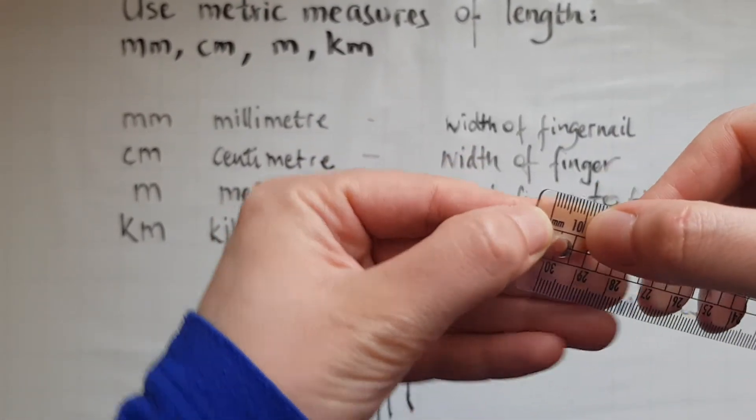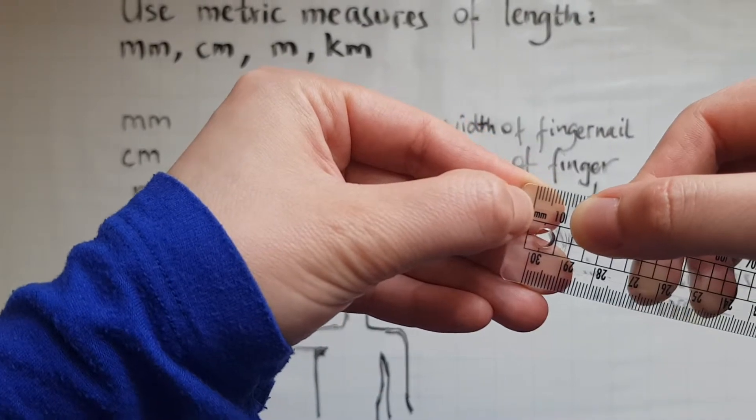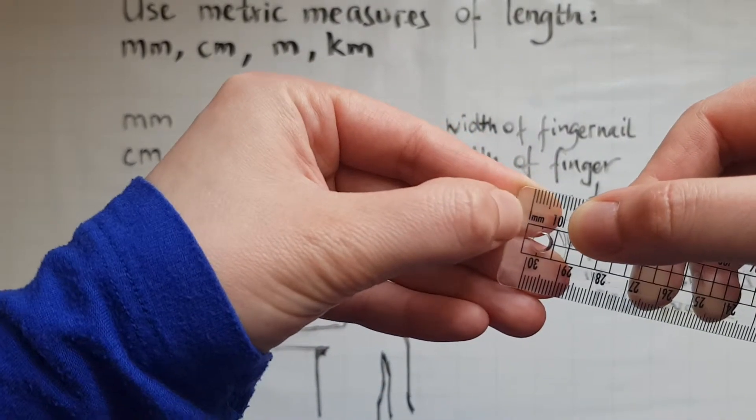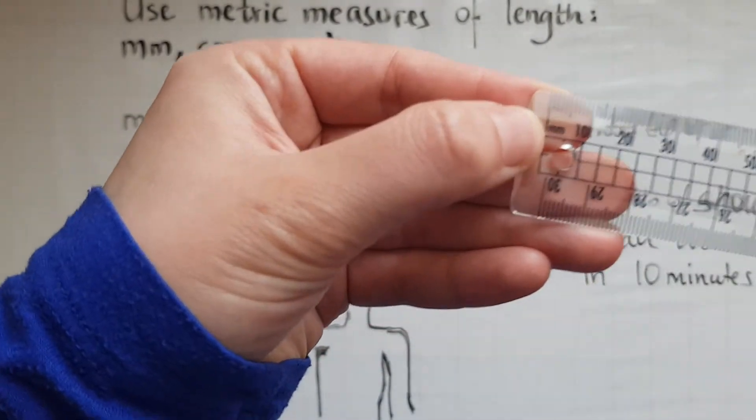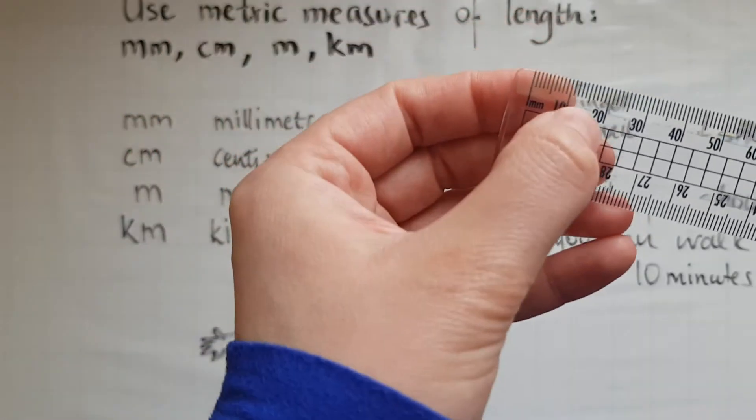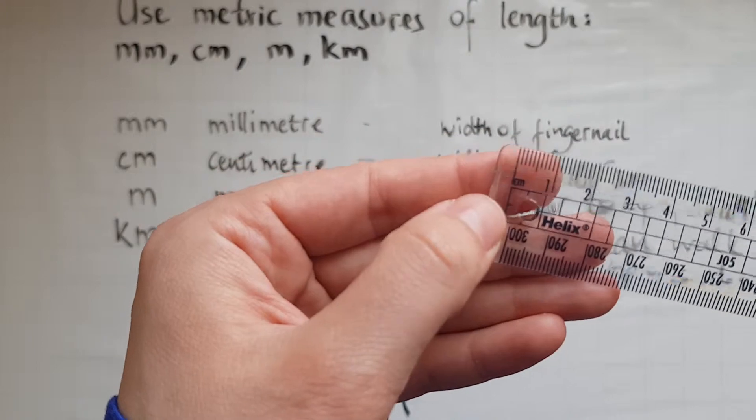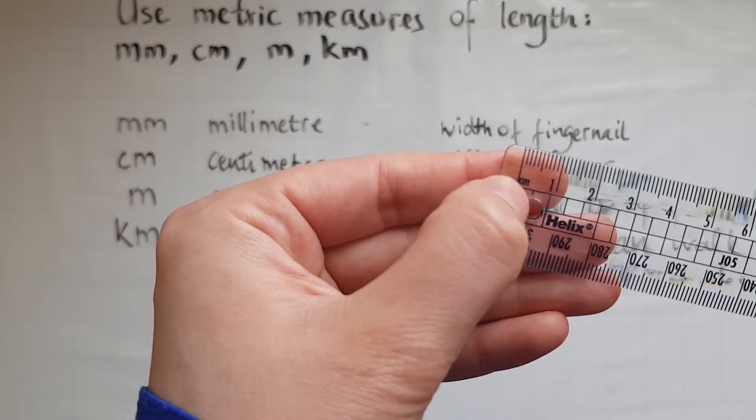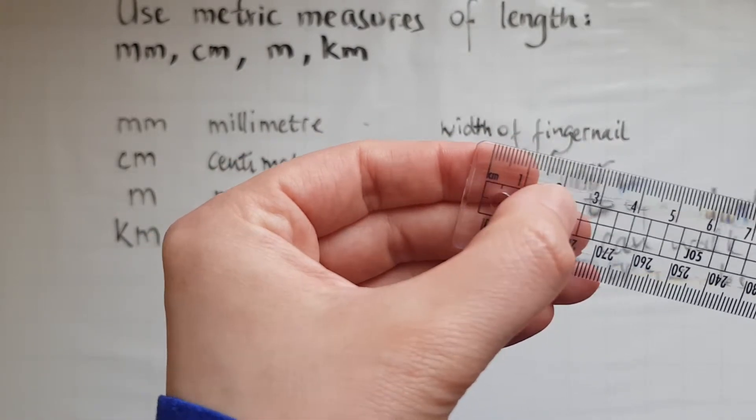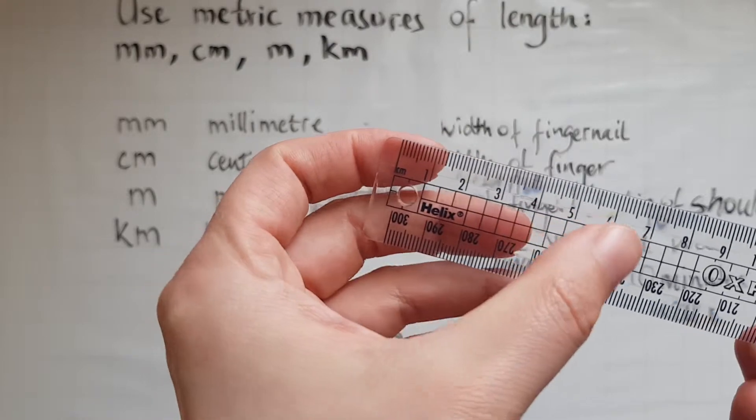You've got that ten in there to show ten millimeters. So ten millimeters make a centimeter, and if I turn it this way I can clearly see centimeter - so that's one, that's two, three, four, five, and so on.